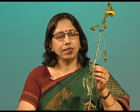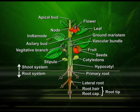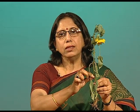Root is generally known as the descending organ of the plant. The shoot is the ascending part of the axis, bearing branches, leaves, flowers, and fruits. The shoot system develops from the plumule of the seed, and the root system develops from the radicle. The shoot bears leaves, and these leaves are generally borne in the nodes.